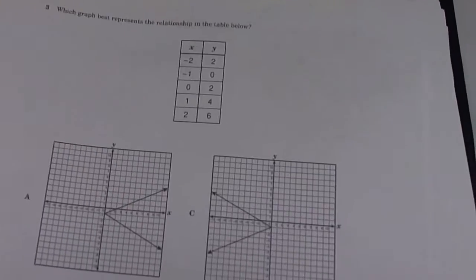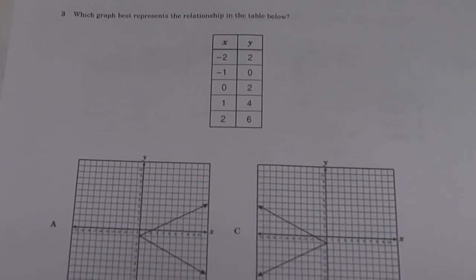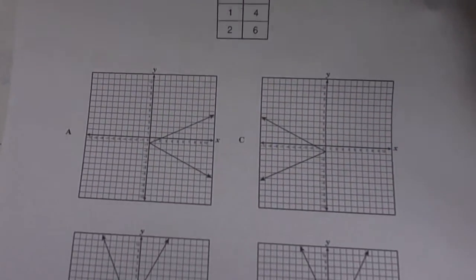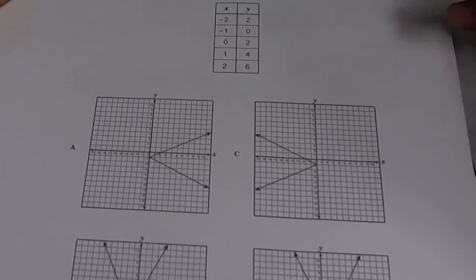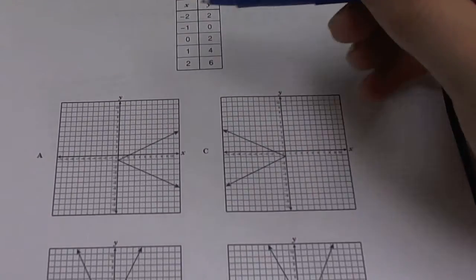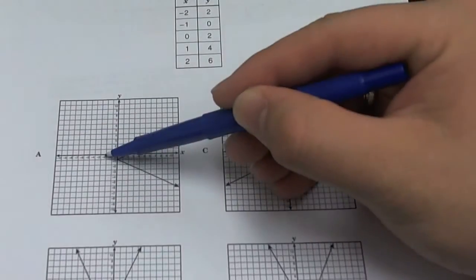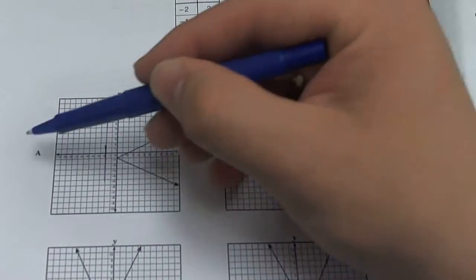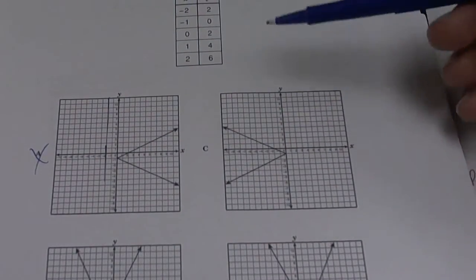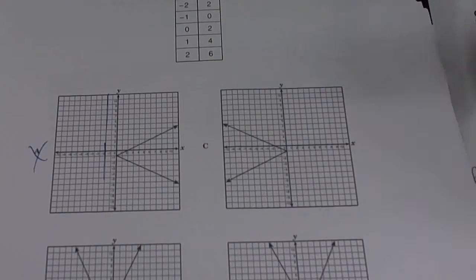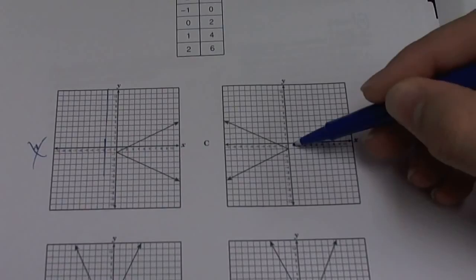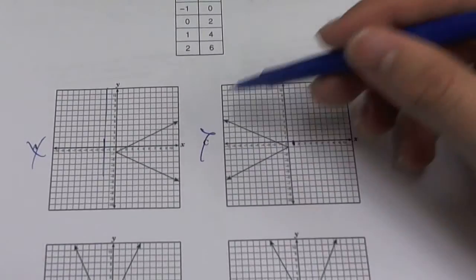Number 3, which graph best represents the relationship of the table below? Gives you the x values and your y values. So you just plug them in. So you have x is a negative 2, y is a 2. So when x is negative 2, so A, there's no negative 2 points. So A is wrong. Let's look at C. Negative 2, negative 1. Okay, those seem to be right. 0, okay, 1. Positive 1 is here. There's no points there. So that's wrong.